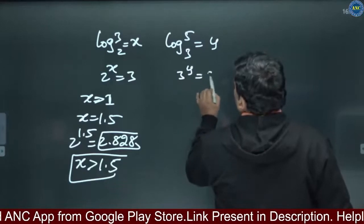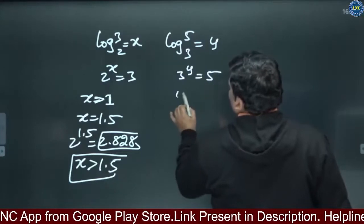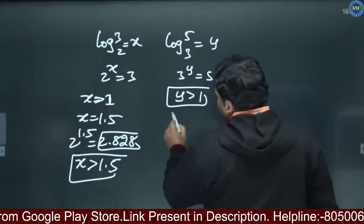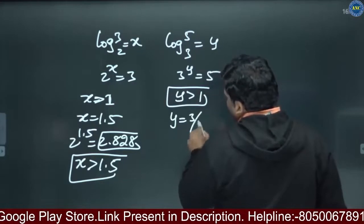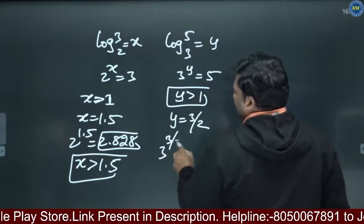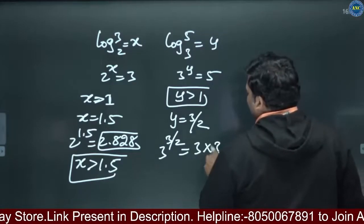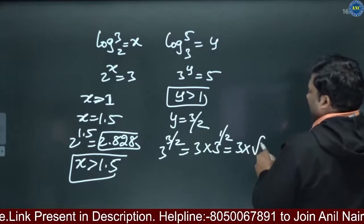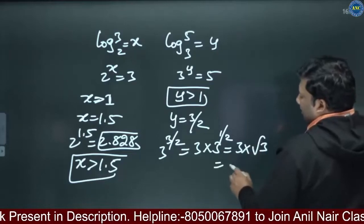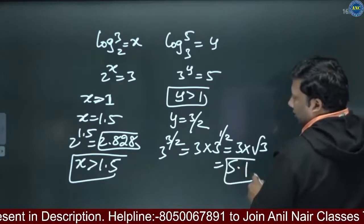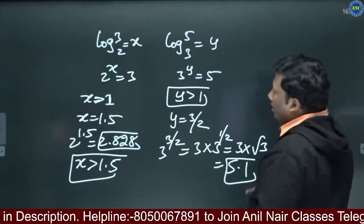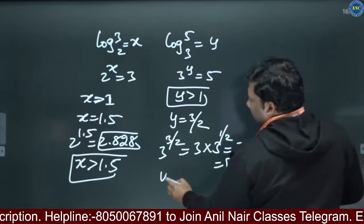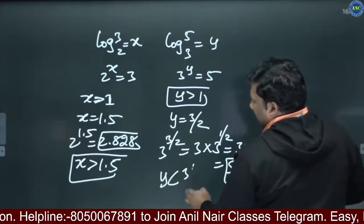Let log 5 base 3 be equivalent to y, so 3 power y equals 5. Since 3 power 1 equals 3, y is greater than 1. If I put y equal to 3 by 2, then 3 power 3 by 2 equals 3 into root 3, and root 3 is approximately 1.7, so 1.7 into 3 equals 5.1. But the value here is 5, so 5.1 is greater than 5, meaning y should be less than 3 by 2.